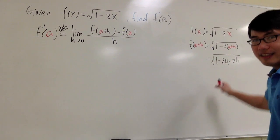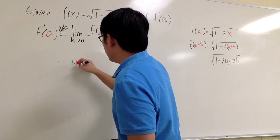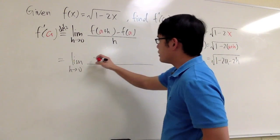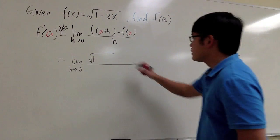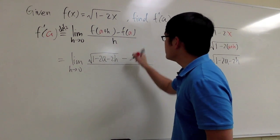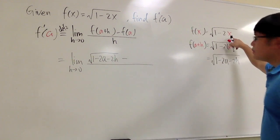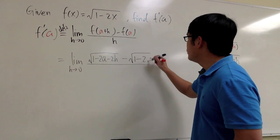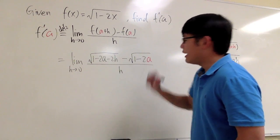I will take that result and plug it back in. The limit as h goes to 0: this part is square root of 1 minus 2a minus 2h. Then we have minus f of a. To get f of a, we plug a into x, so we have square root of 1 minus 2a inside the square root. In the denominator, we have h.